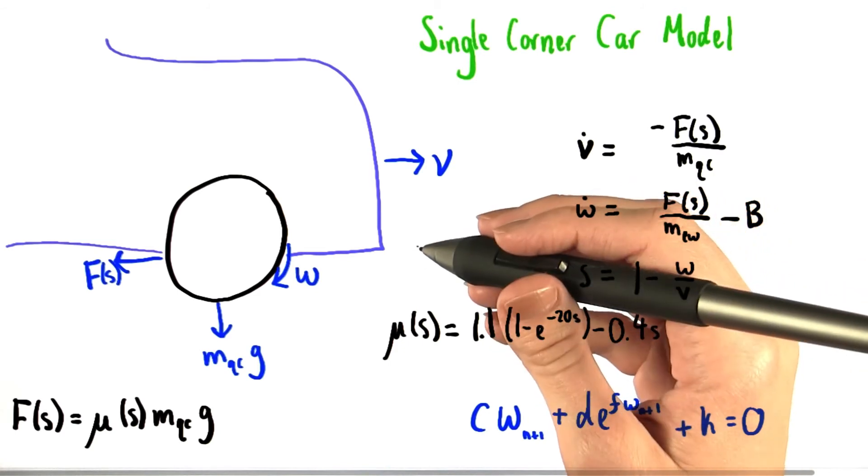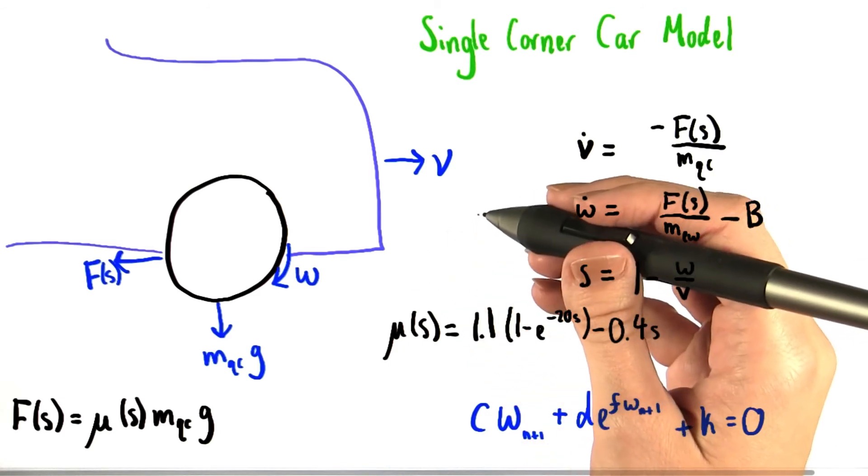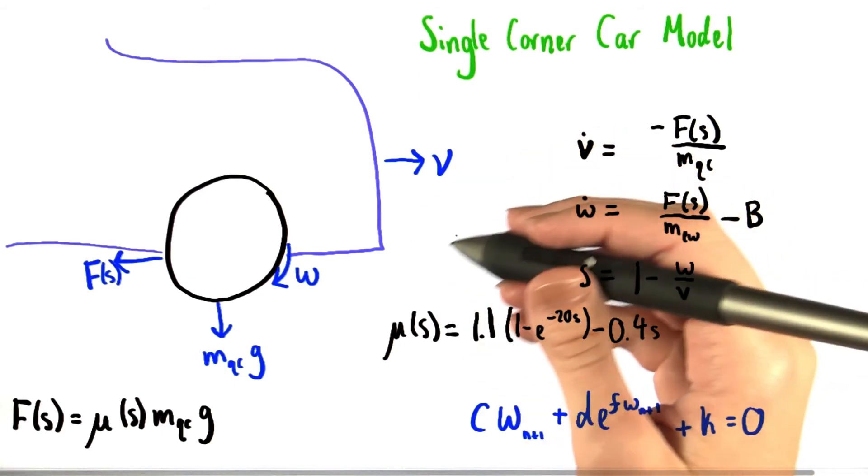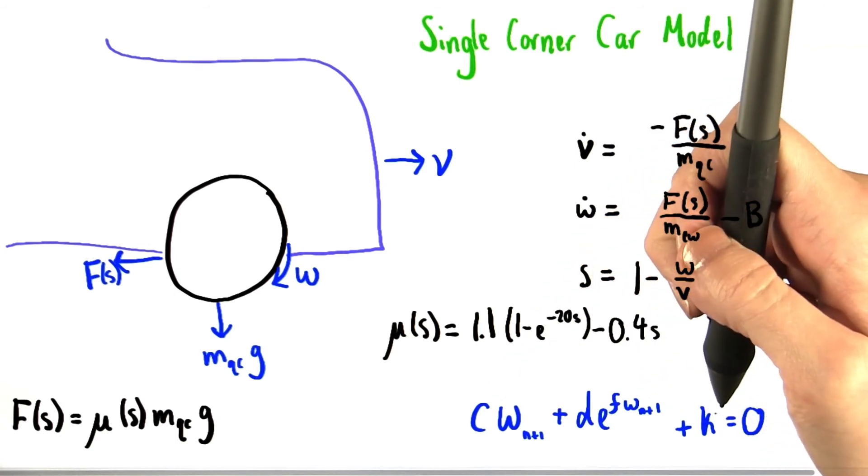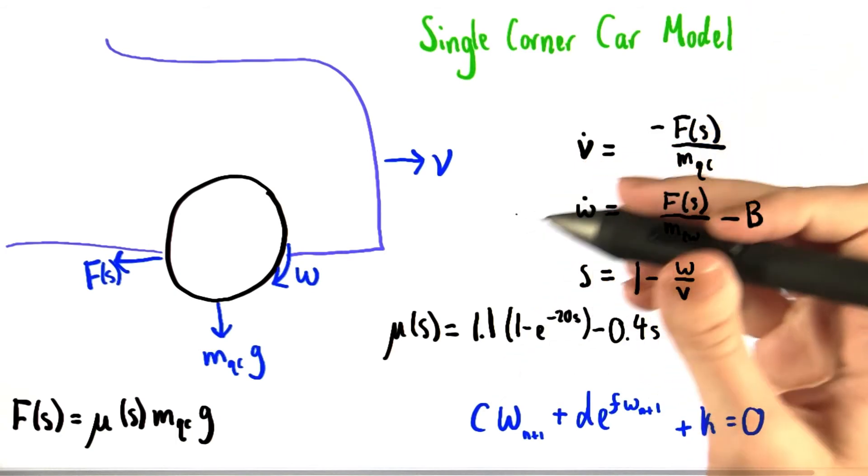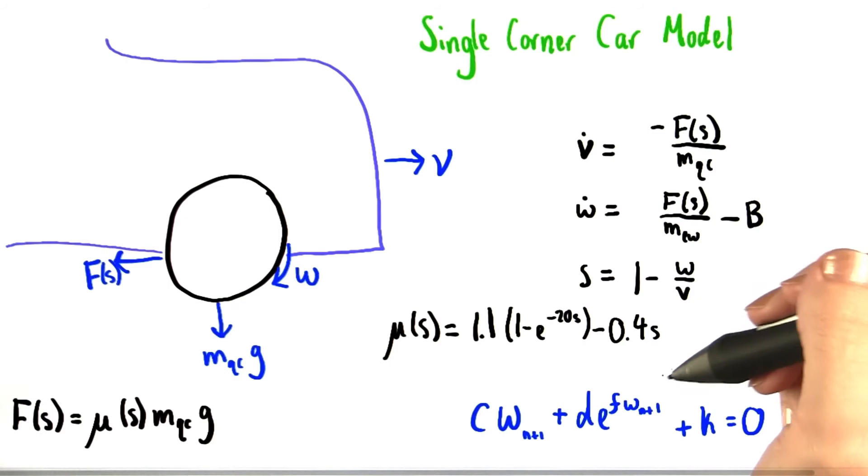If you want to test this out, try plugging in H equals 0.1 seconds for the step size and see what kind of craziness ensues. In order to figure out what to plug in for C, D, F, and K here, we want you to use the backward Euler method along with the information that we've given you here.